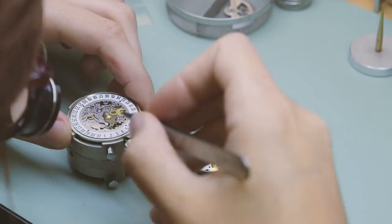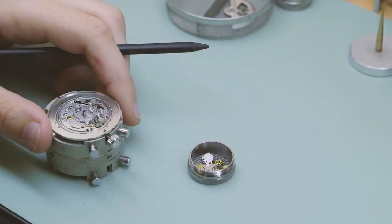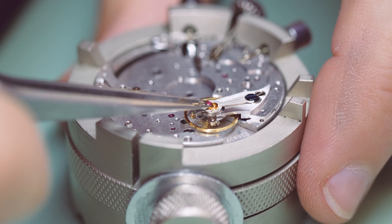In watchmaking there are two main varieties of shock setting, the inca block and kiff. Here we see the inca block system.